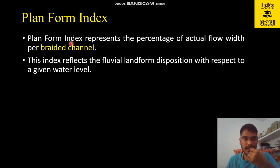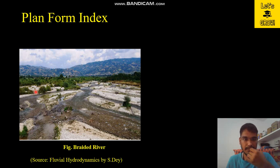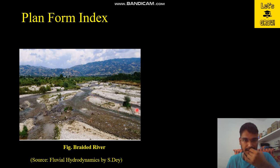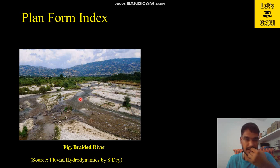Now we will discuss the plan form index. Plan form index represents the percentage of actual flow width per braided channel. Before discussing it, let us look at an image of a braided channel. Whenever there is low discharge in the river, you can see bars — exposed soil or exposed bed of the river. Water is flowing in some parts while other parts are exposed; these exposed lands are called bars. This occurs during low discharge only; during high discharge these bars are submerged. Whenever these bars are exposed, the river is termed a braided river.